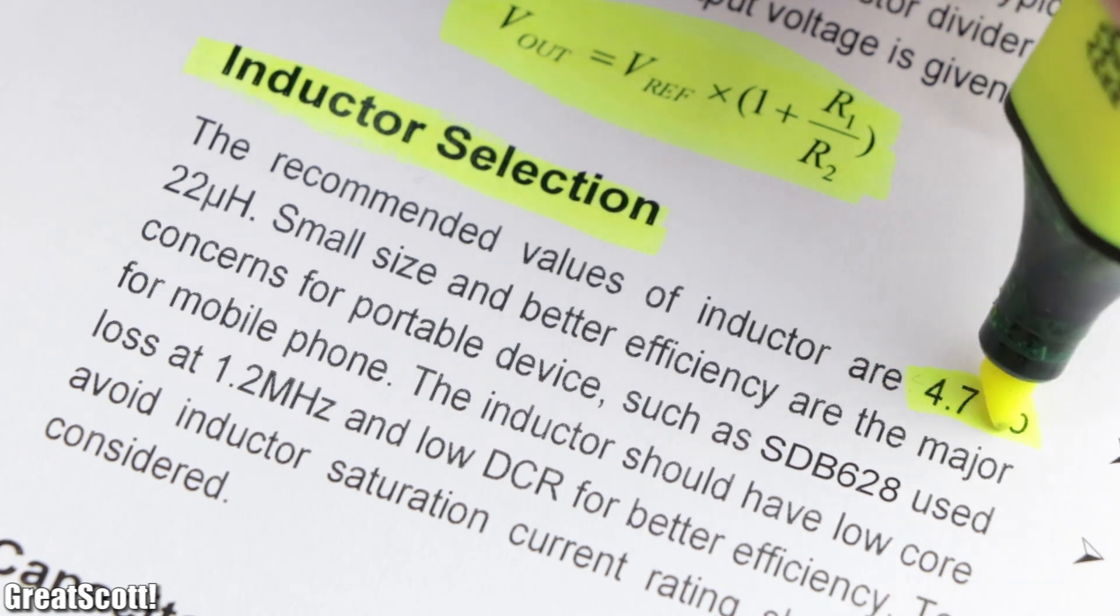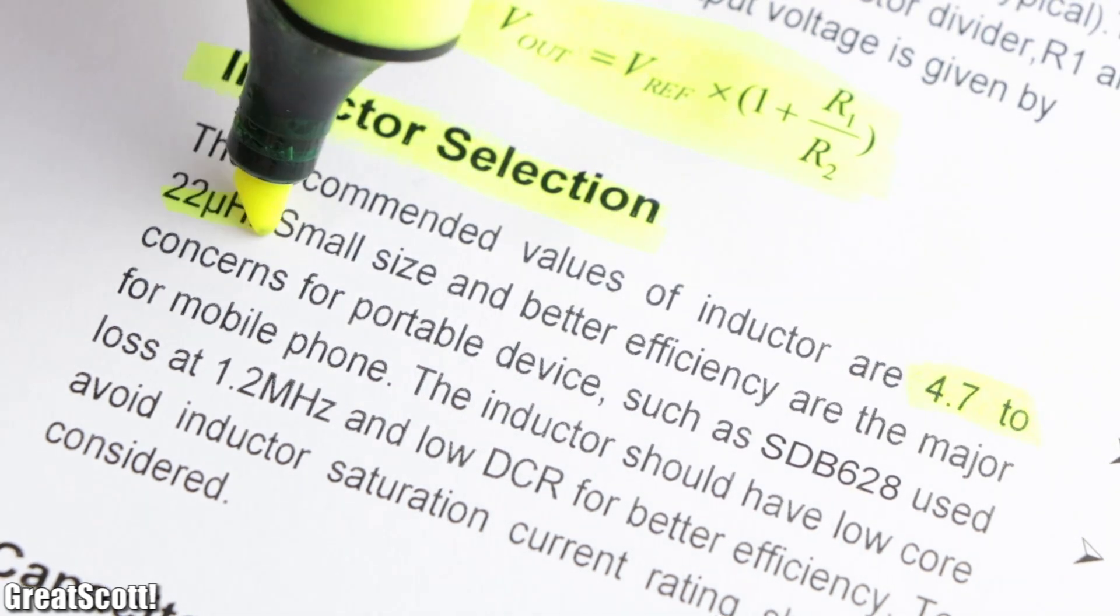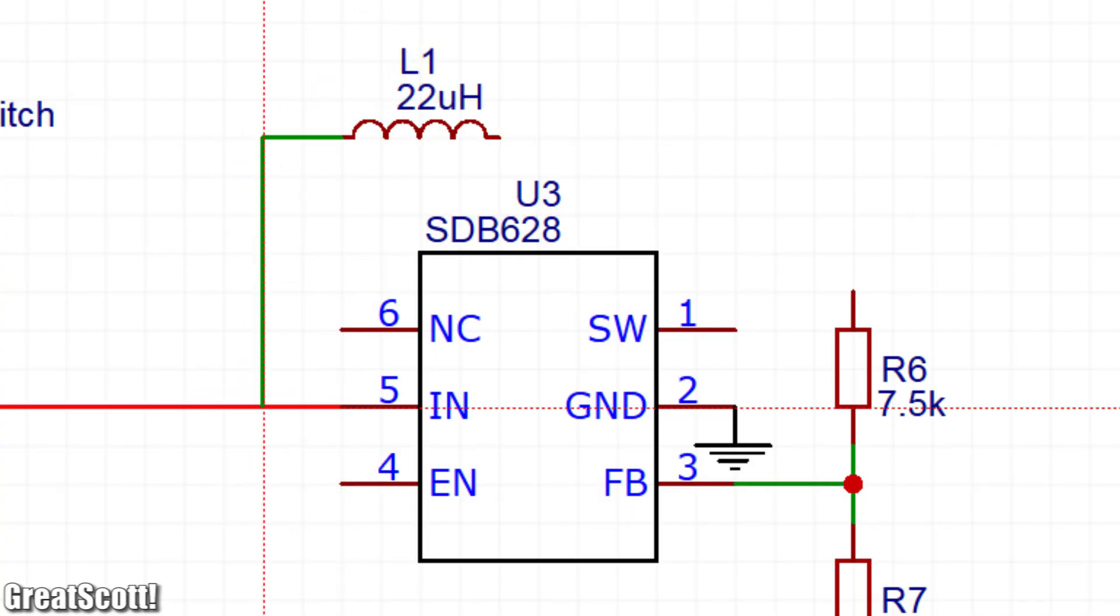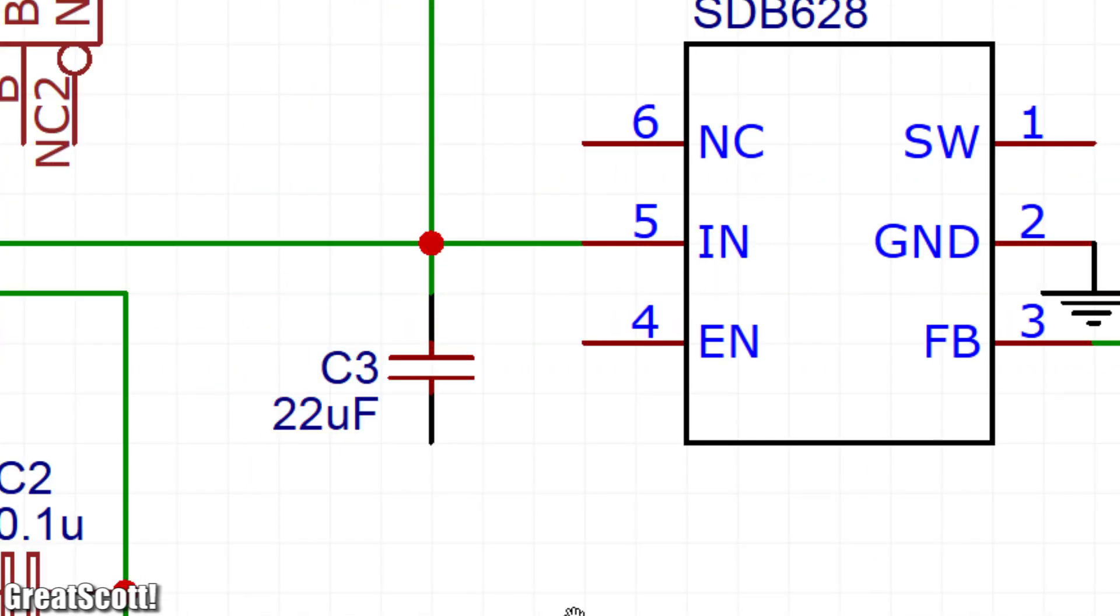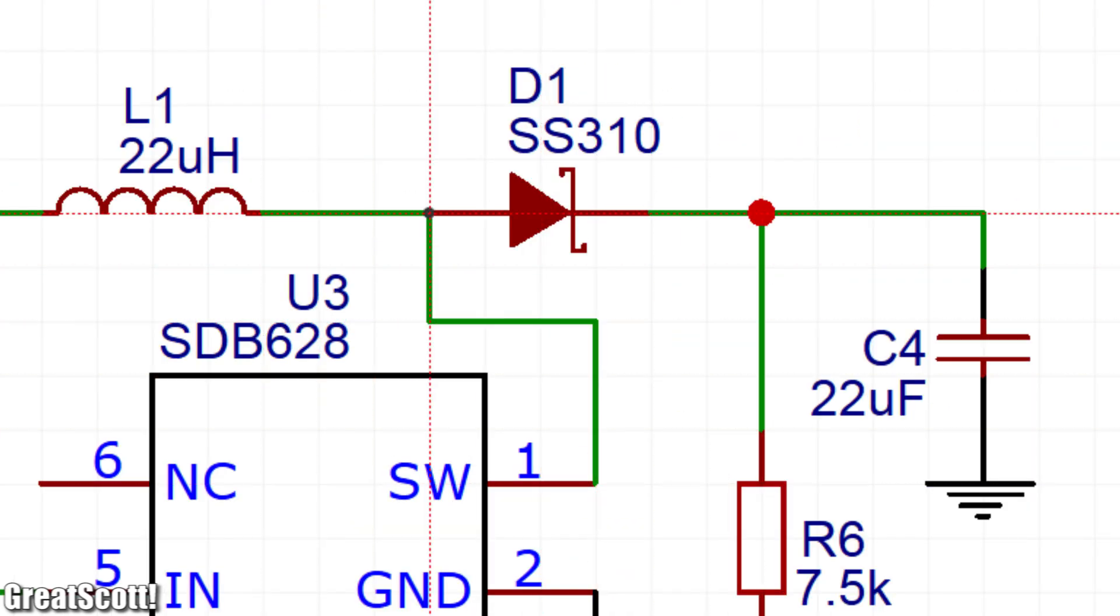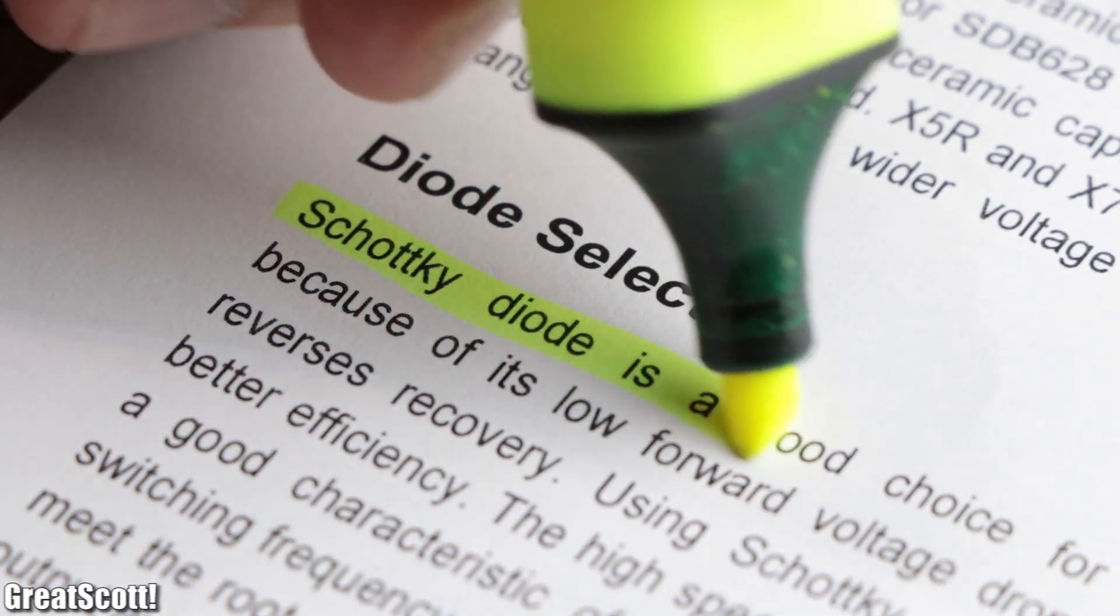Next the datasheet recommends an inductor value between 4.7 and 22 microhenry. I went with the biggest value and continued by adding input and output capacitors with a value of 22 microfarads and a suitable Schottky diode, all of course according to the datasheet.